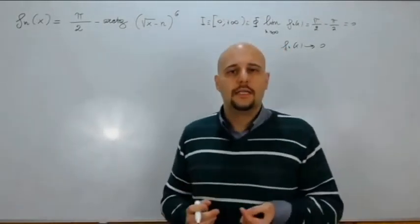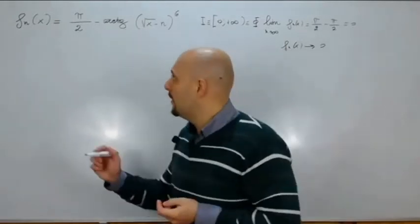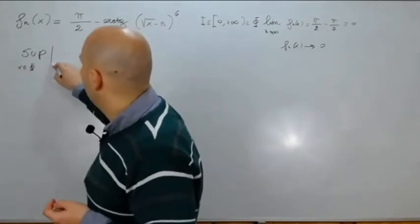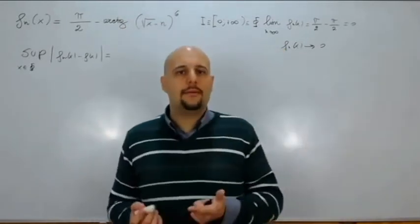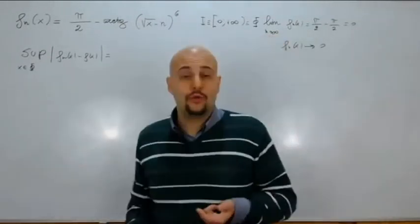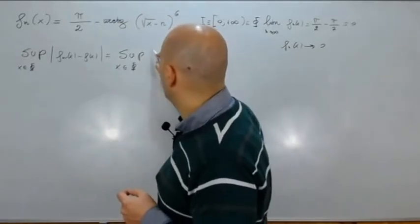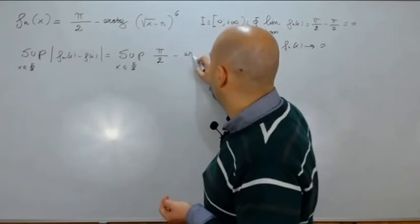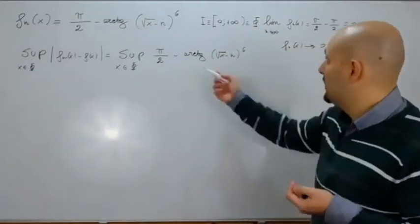Andiamo a studiare la convergenza uniforme, verificando innanzitutto se c'è in [0, +∞). Calcoliamo il sup per x ∈ Θ di |f_n(x) - f(x)|, che in questo caso, visto che la funzione limite è identicamente nulla, diventa il sup di |π/2 - arctan((√x - n)⁶)|, che è sempre positiva in [0, +∞).